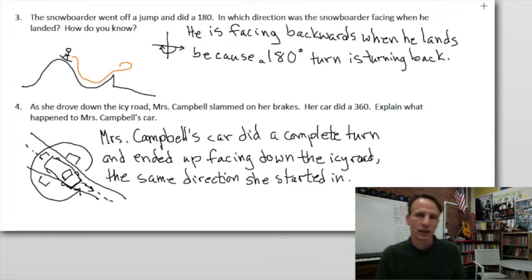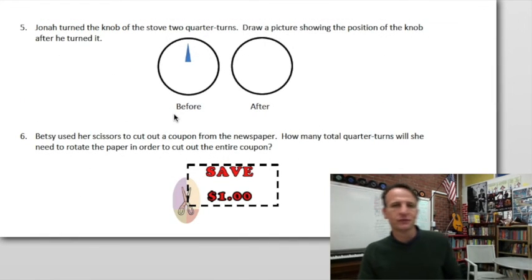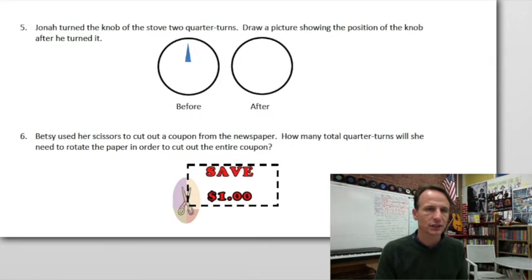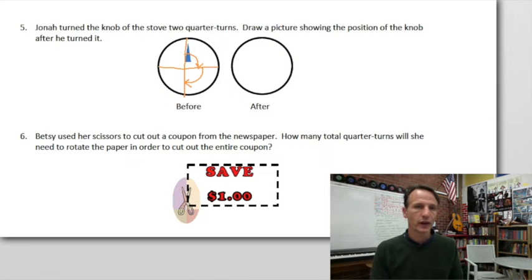Number five. Jonah turned the knob of the stove two quarter turns. Draw a picture showing the position of the knob after he turned it. I'm going to divide the circle into quarters to show two quarter turns. There's one quarter turn, and then here is a second quarter turn. So we see one quarter turn, second quarter turn. Where is that knob after he's done it? It's facing straight down, we can see that. And this is by the way exactly the kind of question you're going to see on standardized tests.